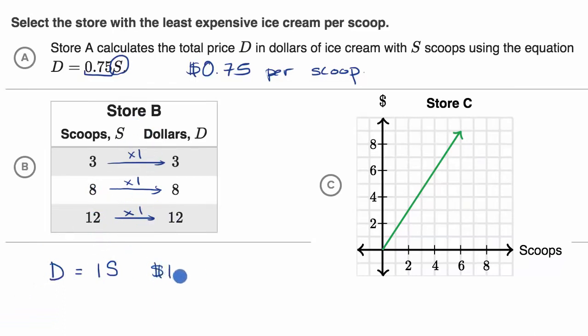So we already know that store A is cheaper than store B, because 75 cents per scoop is cheaper than one dollar per scoop. Store C.